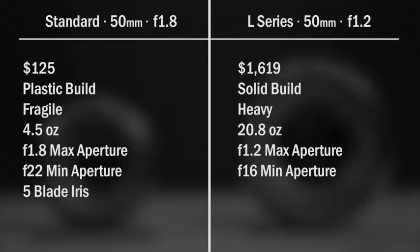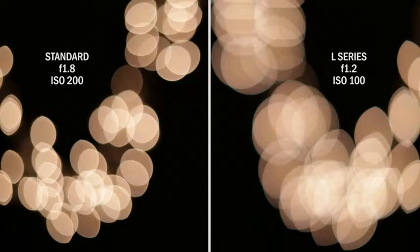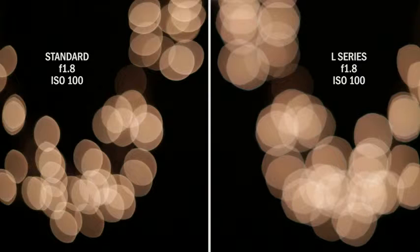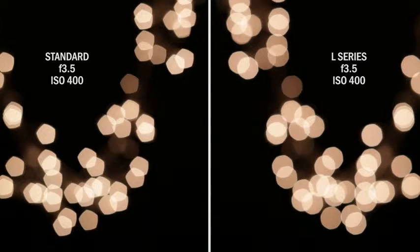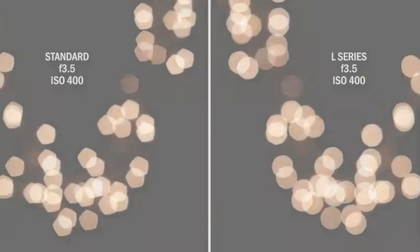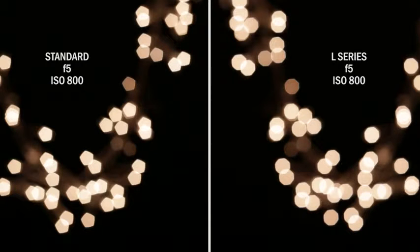Alright, let's talk about the irises on these two cameras. The F1.8 lens has a five-bladed iris and the L-Series lens has an eight-bladed iris. Now, what is this going to affect? This is going to change the type of bokeh that these lenses produce. So let's take a look at a little bit of test footage at some various f-stops to see how this works in practice. Alright, so now that you've seen the differences in the type of bokeh that these two lenses produce, let's talk about focusing.